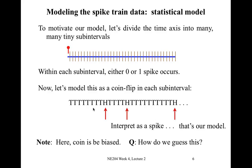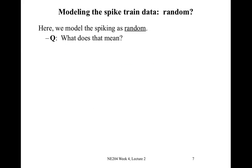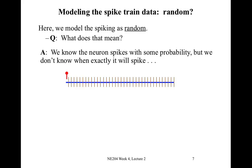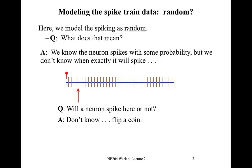We consider the idea that the spiking model is random. What exactly does this mean? What we mean is that we know the neuron spikes within each interval with some probability, but we don't know exactly when it will spike. Here is our time axis divided up into tiny bins, and we could choose one of the bins and ask: in this bin, will the neuron spike or not?